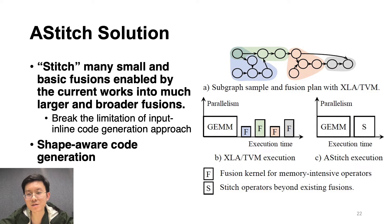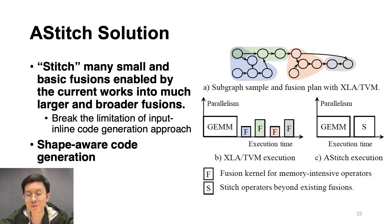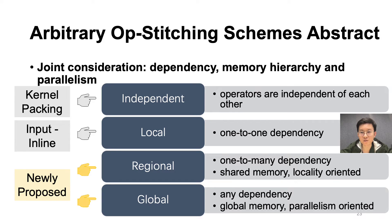To address the limitations of existing works, we propose iStitch. It is able to stitch many small and basic functions enabled by current works into much larger and broader functions. In other words, iStitch expands the fusion optimization space beyond existing works. Meanwhile, we propose a shape-aware code generation approach to utilize GPU resources better. We first make four abstractions for op-stitching schemes. The schemes cover arbitrary op-fusion scenarios and are a joint consideration of dependency, hardware memory hierarchy, and parallelism.